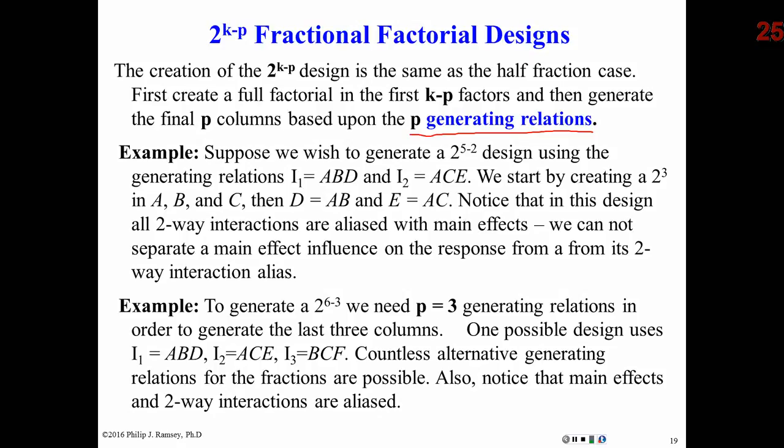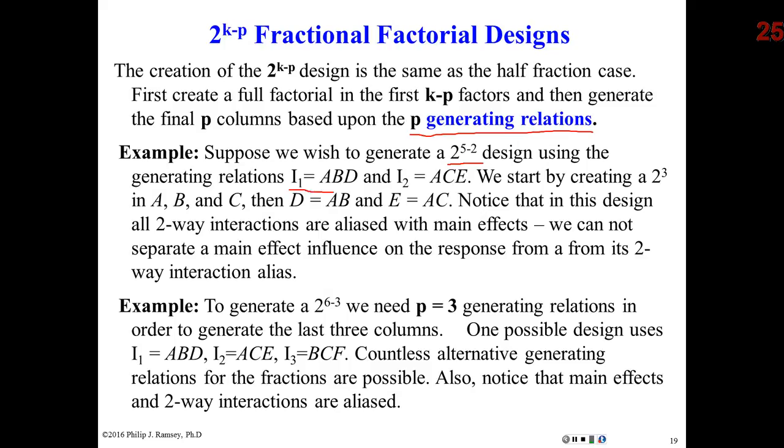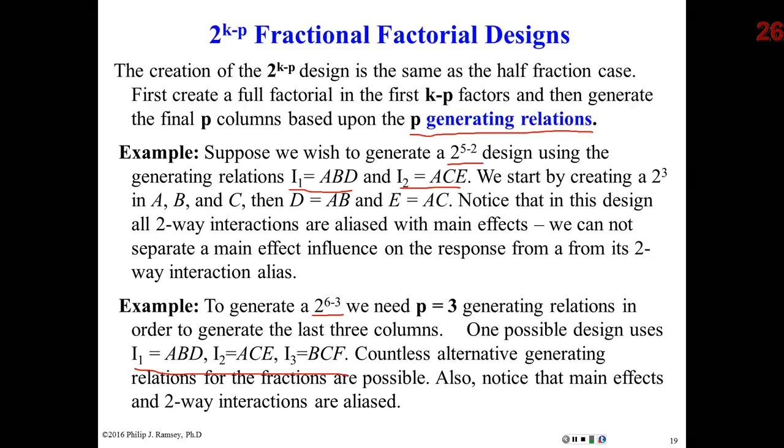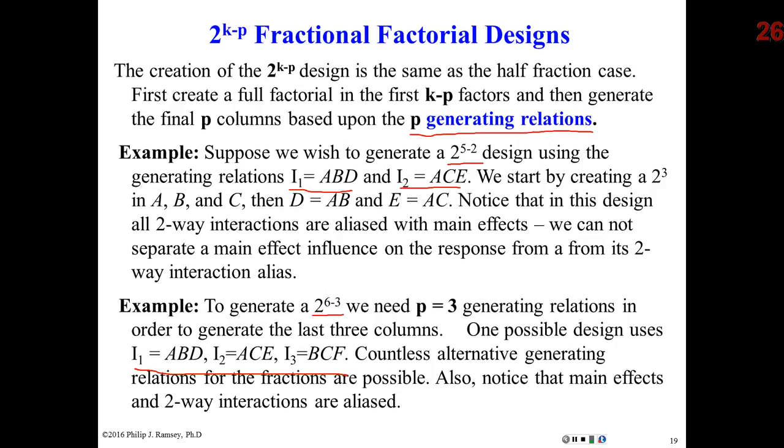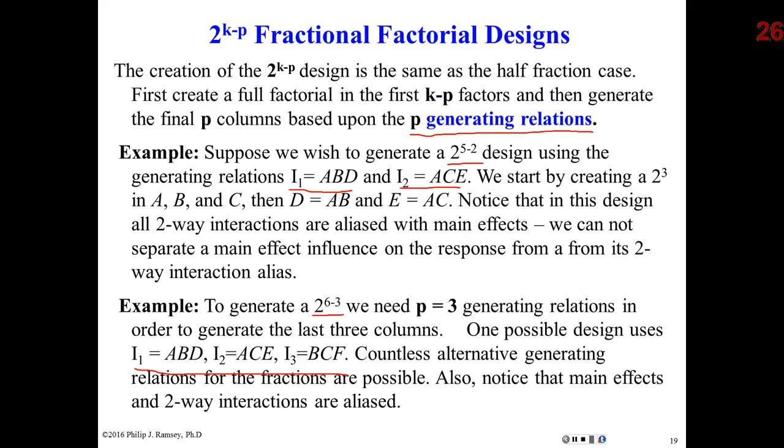So if I wanted a 2 to the 5th minus 2, I'd first split the design on ABD, the three way. And that would get me to 16. And then I would get to 8 by splitting on ACE. Now, suppose I wanted a 2 to the 6th minus 3. I need three. I've got to split the design in half three times. So notice, here are three possibilities. By the way, these were picked by JMP. There is nothing intuitive about how they're selected. So don't try to gain some insight into how it's done. It turns out it's all done by brute force searching, using various types of numerical methods. This is a very difficult problem, knowing the best way to split a design. And we now live in an era where we just let the computer and optimization algorithms do it for us.